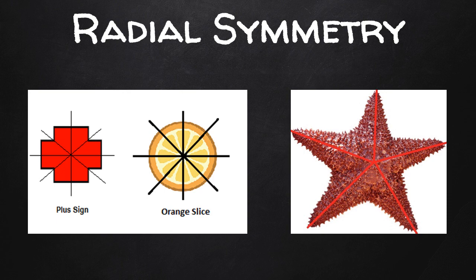Animals with radial symmetry have a top and a bottom. They have no front or back, and no left or right. Their body parts are organized around an axis, meaning if you cut their body in half in any direction, you get two equal halves.